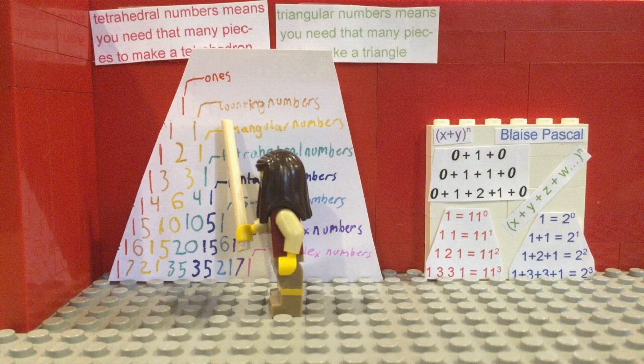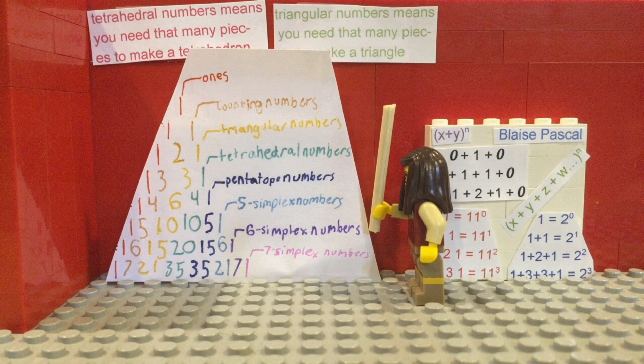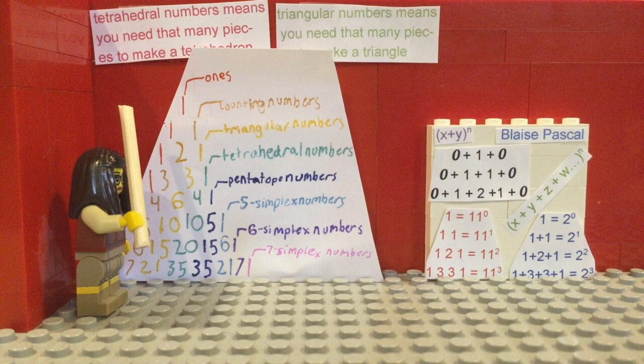The counting numbers just go in order: one, two, three, etc. The triangular numbers means that you need that many pieces to make a triangle. The tetrahedral numbers means you need that many pieces to make a tetrahedron.